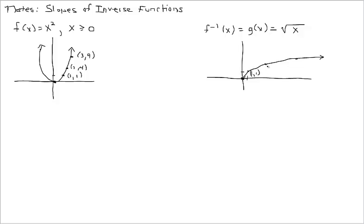So naming these points on the inverse: 1, 1; 4, 2; and 9, 3. Analytically, I'm going to show that the square root function is the inverse to f of x — this might remind you of something you've done in the past. So if you just want to watch what I'm doing here, that'd be fine.